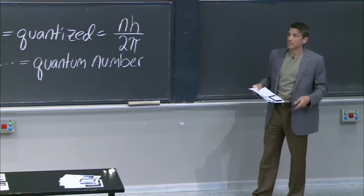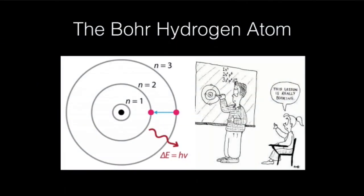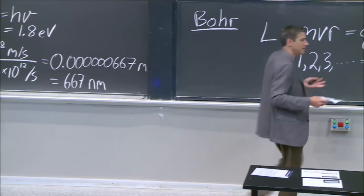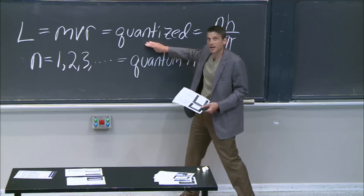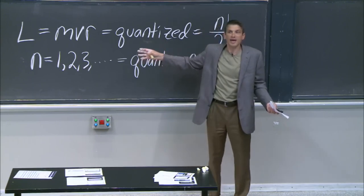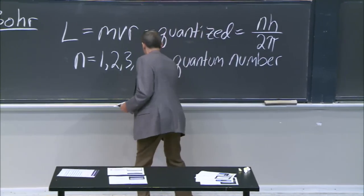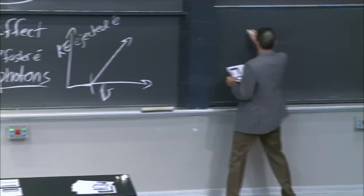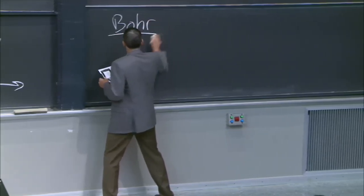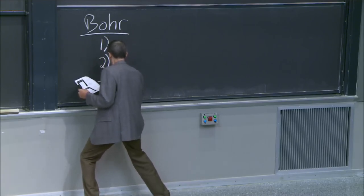I will not derive Bohr's model for you, I will tell you what it is. You can look up the derivation — it's actually fairly straightforward. It basically has to do with this one assumption: quantization of the angular momentum of that electron, combined with F = ma and the electron being stable — not accelerating in. And when you do that, what you get with Bohr's model are three extremely important outcomes.